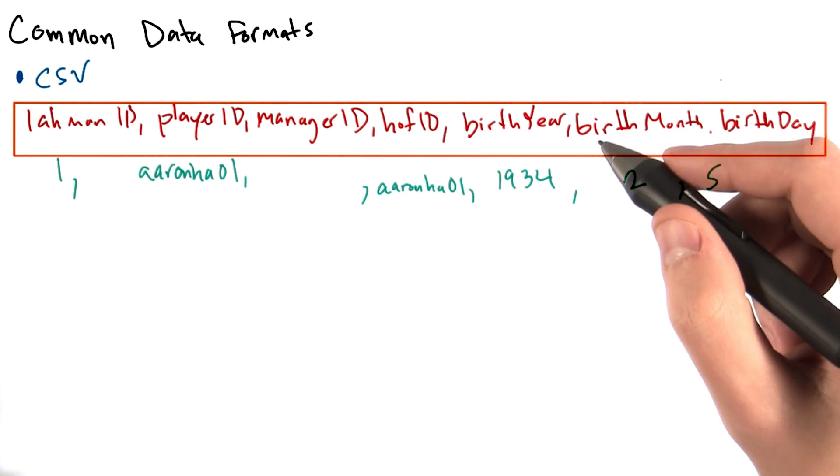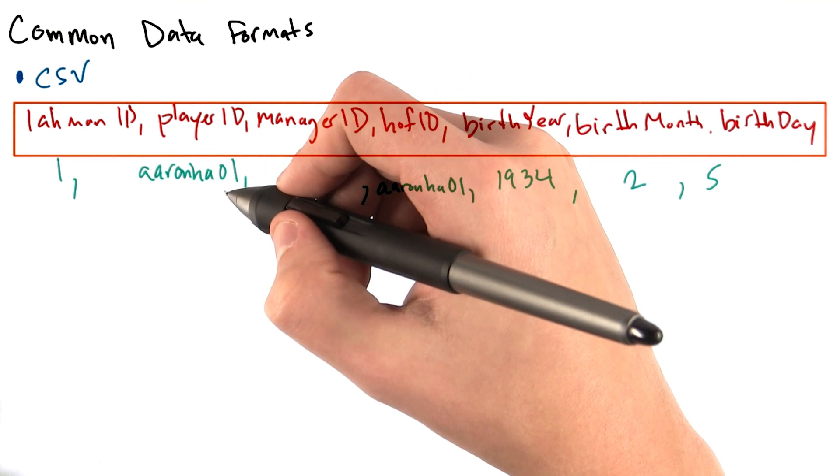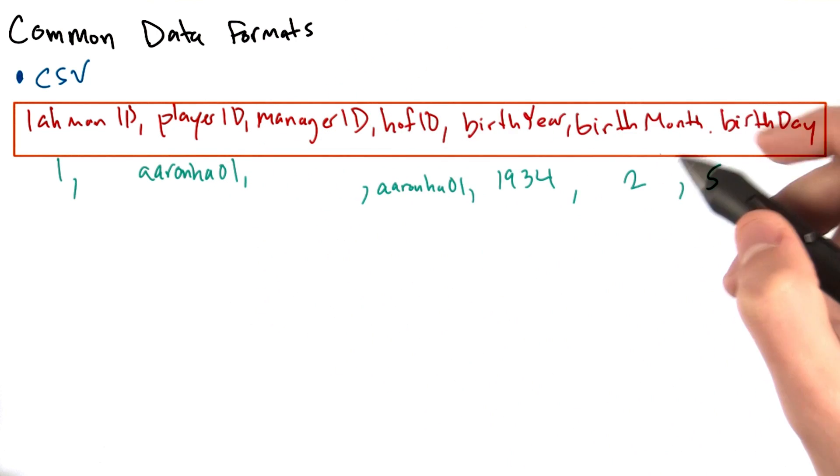If we go and look at the entry for Hank Aaron, we see all of these values, one for Laman ID, Aaron HA01 for player ID, etc., separated by commas.